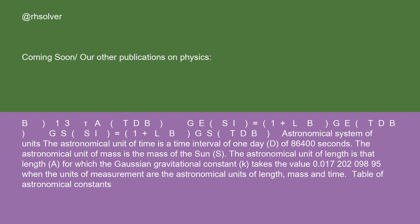Astronomical system of units: the astronomical unit of time is a time interval of 1 day (D), equal to 86,400 seconds. The astronomical unit of mass is the mass of the Sun (S). The astronomical unit of length is that length (A) for which the Gaussian gravitational constant K takes the value 0.01720209895 when the units of measurement are the astronomical units of length, mass, and time. Table of Astronomical Constants.